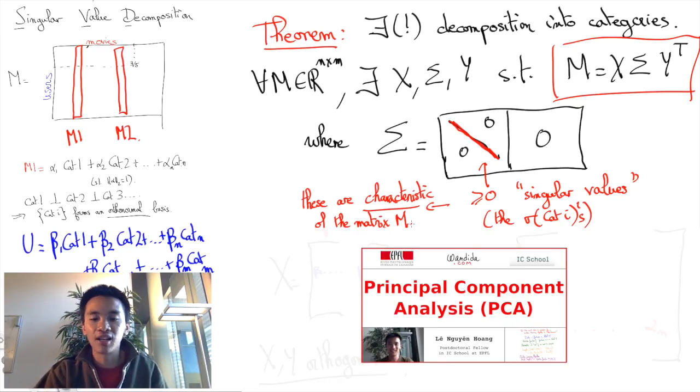PCA can be regarded as a special case of SVD where the matrix we started with is symmetric. The beauty of SVD is that no such restriction is imposed on the initial matrix.